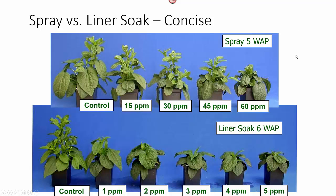As we go through here, all of our sprays and drenches were applied one week after planting, and our measurements were at two-week intervals. As we took our pictures and our data, they are going to be one week younger than the liner soaks, which we planted the day after treatment. So our weeks after treatment and our weeks after planting are the same. Just to let you know, the liner soak plants in the photos are one week older than those pictured in the spray and drench treatments.